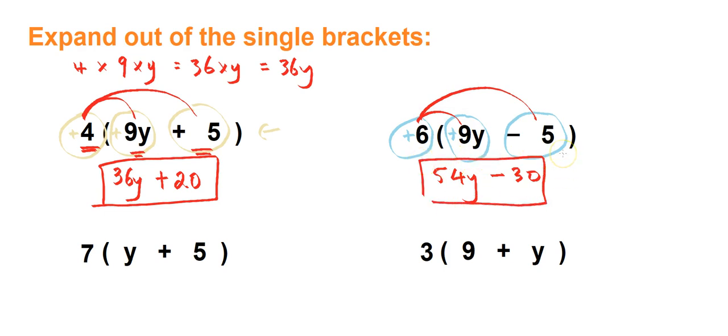And that one's done. So let's go to the next one down. We've got 7 brackets y plus 5. So let's first identify the terms and their operators. So it's plus, positive numbers. And again,